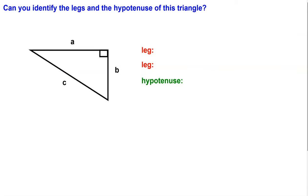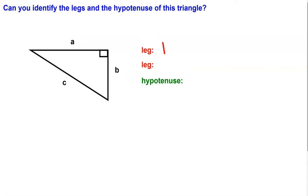Remember, the hypotenuse is always the longest side across from the 90-degree angle, and the legs always touch or create the 90-degree angle. When using the Pythagorean Theorem, you need to successfully identify which two sides are the legs — we generally call them A and B — and the hypotenuse is always the side called C.